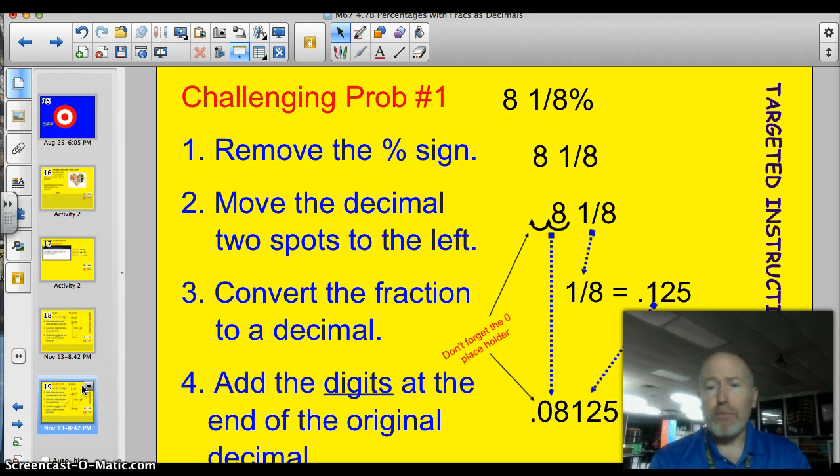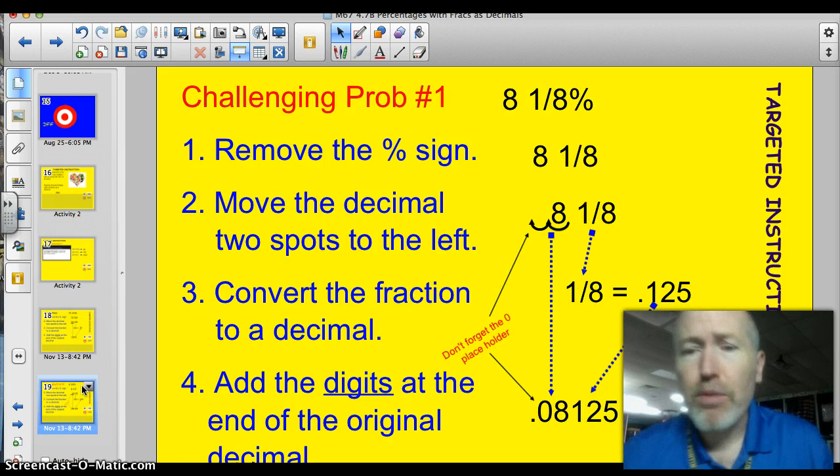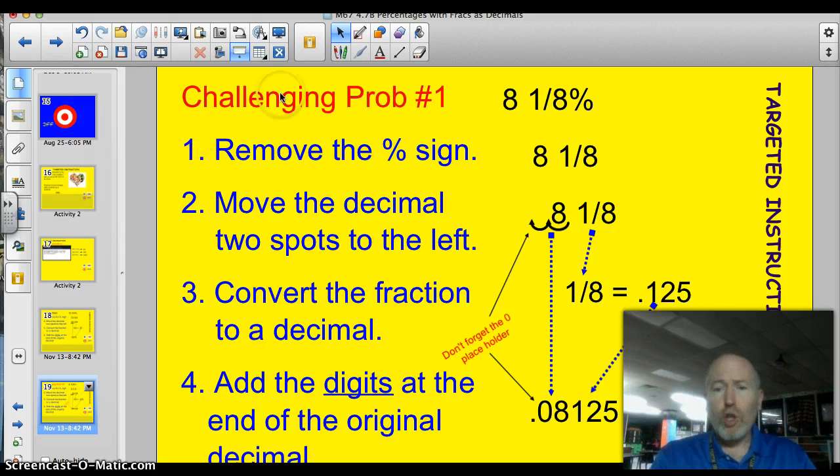Here's a little bit of a challenging problem because it's a single-digit percentage. So it's 8 and 1 eighth percent. So dump the percentage sign. So you've got 8 and 1 eighth. Move the decimal two spots to the left. 1, 2. Now I've got 0.08 and 1 eighth. Convert 1 eighth, which we learned in class, equals 0.125.